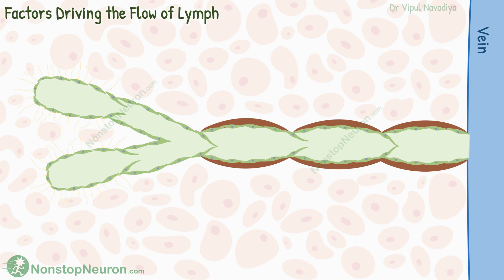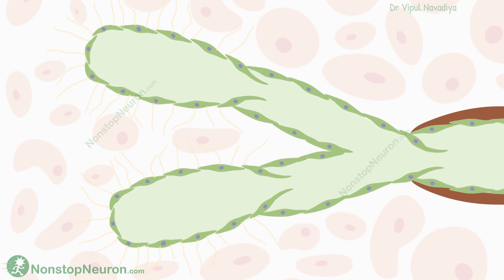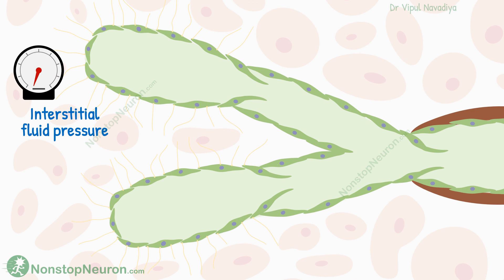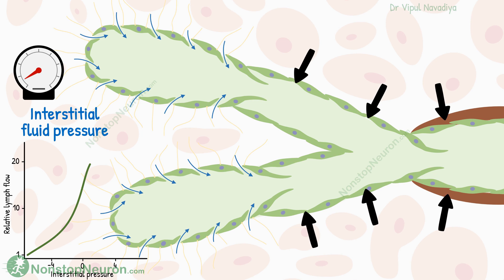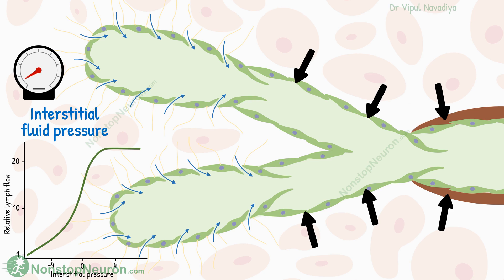Let's see the factors driving the flow of lymph. The first and obvious factor is interstitial fluid pressure. Normally, interstitial fluid hydrostatic pressure is about minus 3 mmHg. With increasing pressure in the interstitium, more fluid enters the lymphatics, so the flow increases. However, this is applicable only up to a limit — pressure above zero starts compressing the lymphatic channels and prevents further increases in flow. At about 2 mmHg, the increased entry of fluid and compression of the channel balance out each other, and after this there is no further increase in flow with increasing pressure.